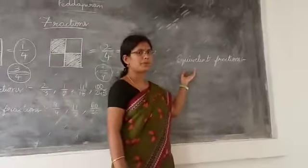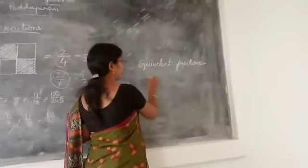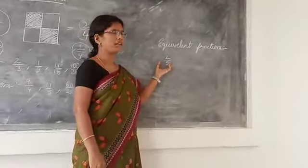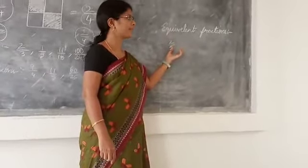Equivalent fractions. Suppose here one fraction given 2 by 5. 2 by 5 fraction given. Now you find equivalent fractions. Equivalent fraction means what?